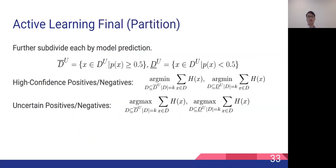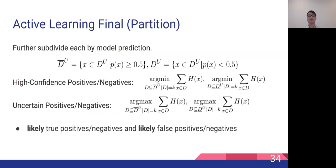To solve the second problem, we further subdivide high confidence and uncertain examples by the current model predictions, defining high confidence positives, high confidence negatives, uncertain positives, and uncertain negatives using entropy and model predictions. These four classes correspond to likely true positives, likely true negatives, likely false positives, and likely false negatives. For example, pairs with high entropy that are classified as positive by the current model are likely false positives.